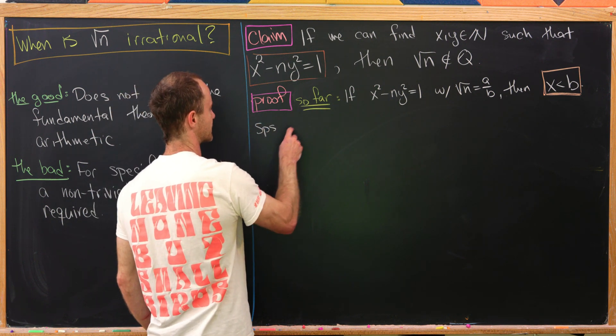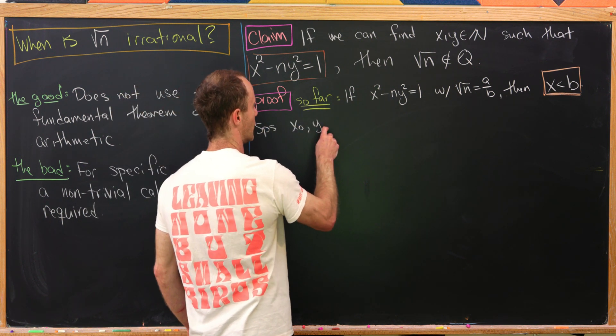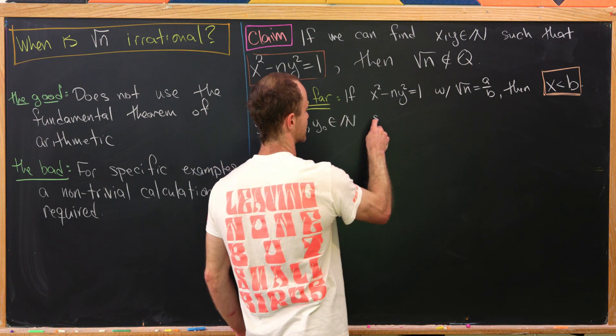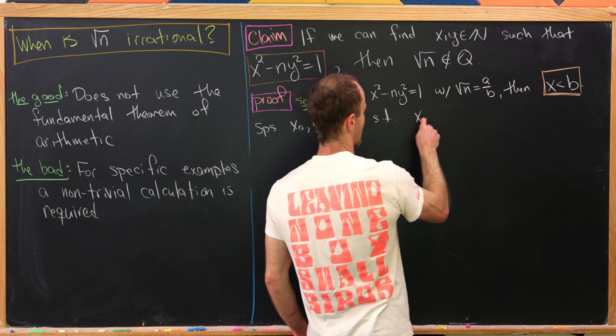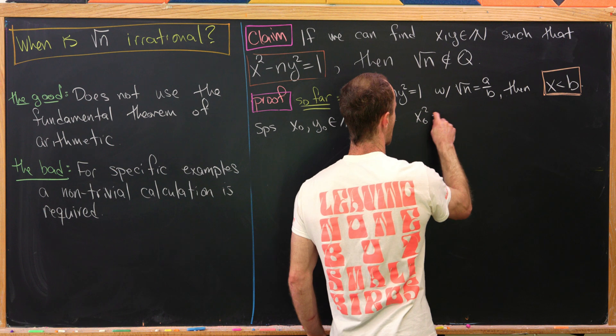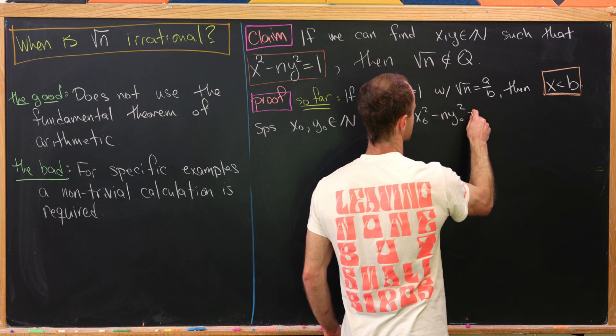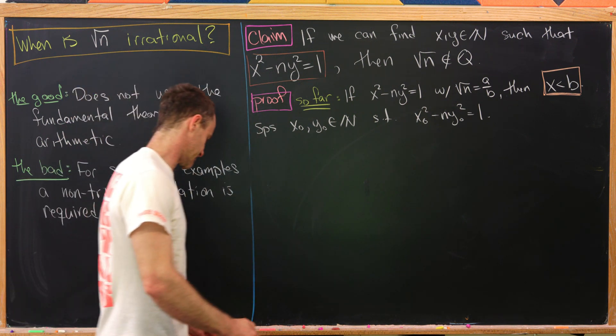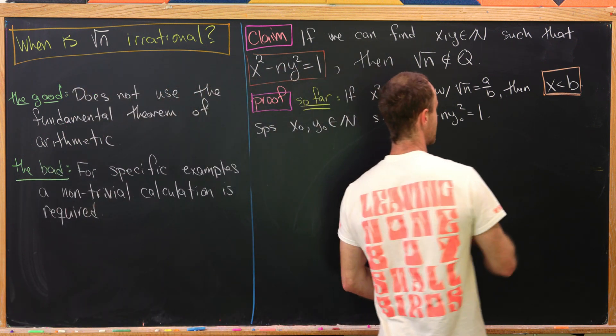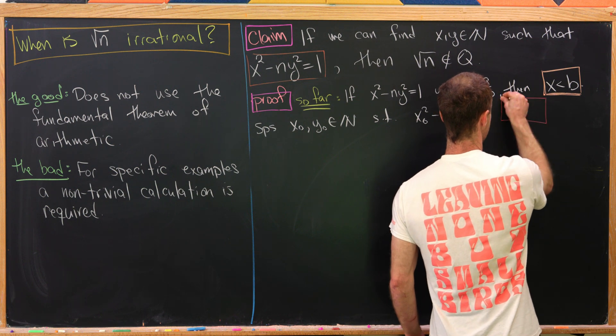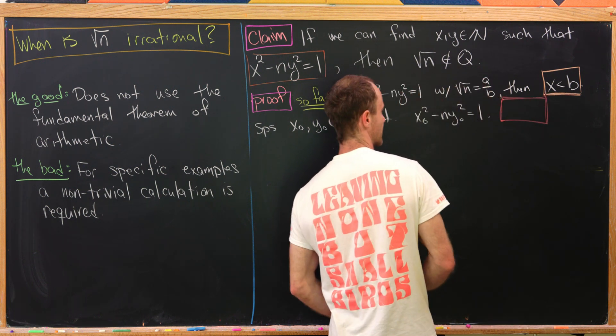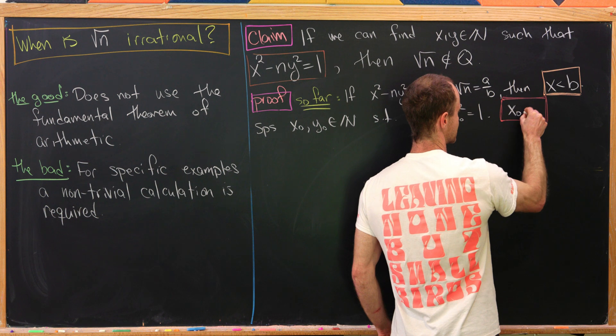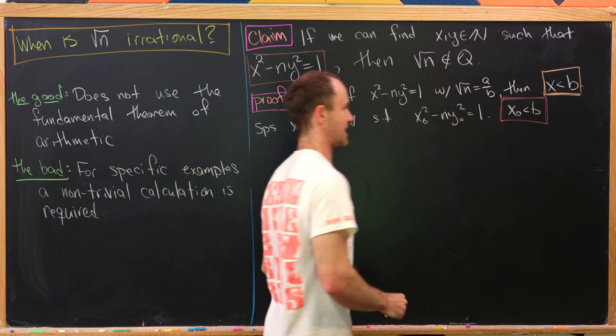Now let's say we've got a solution and let's call that solution x naught, y naught. So let's suppose x naught, y naught are natural numbers such that x naught squared minus n times y naught squared is equal to 1. So they satisfy this condition. Notice immediately from our previous result, we know that x naught is itself less than b.